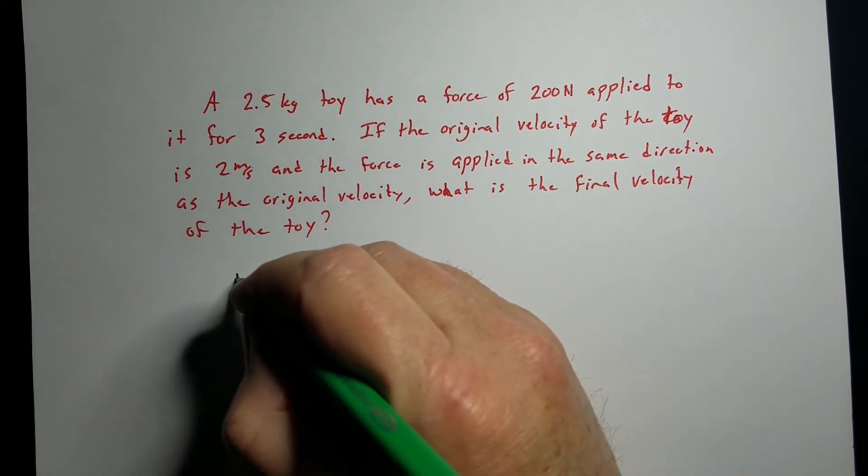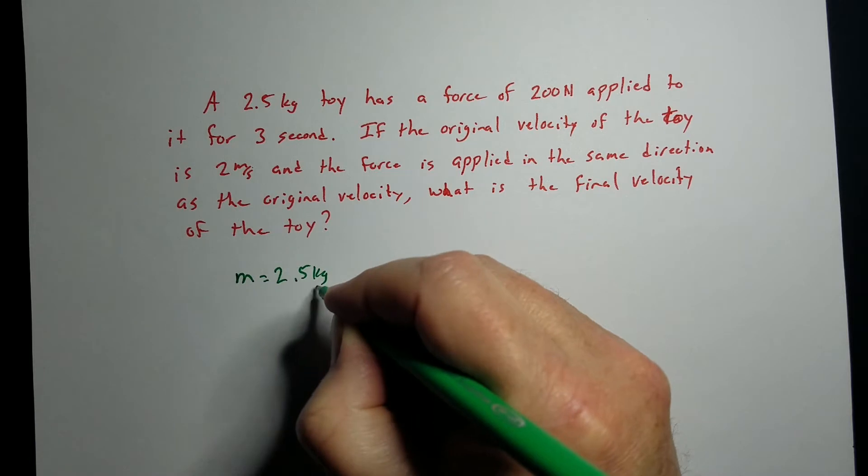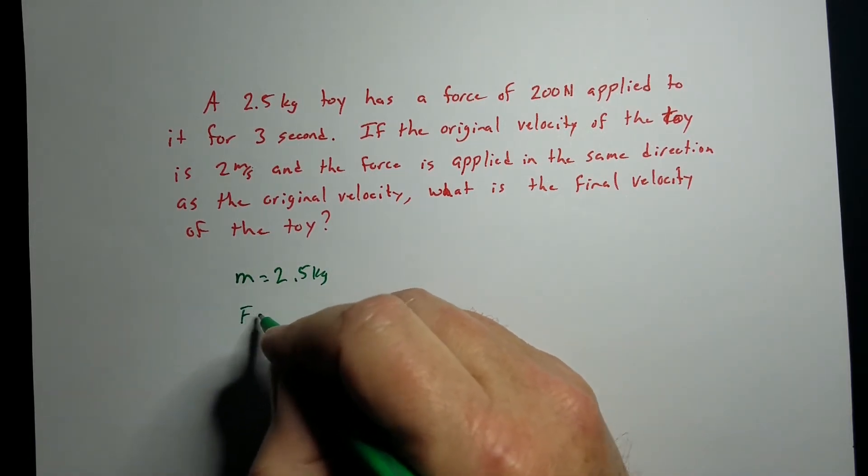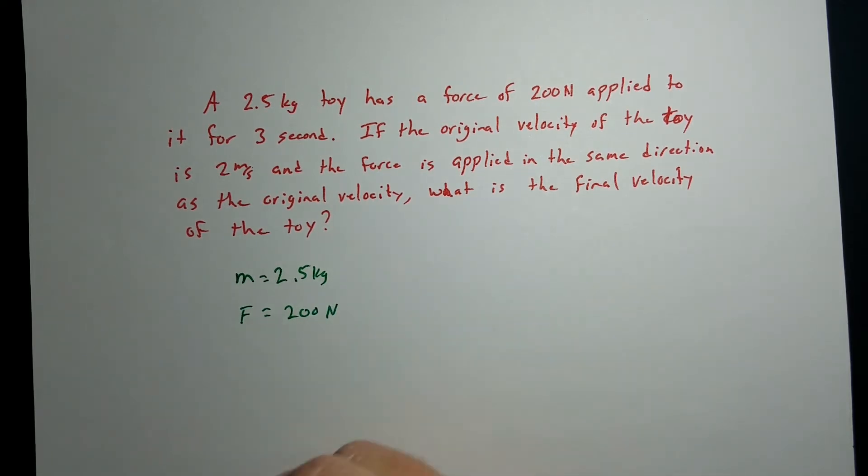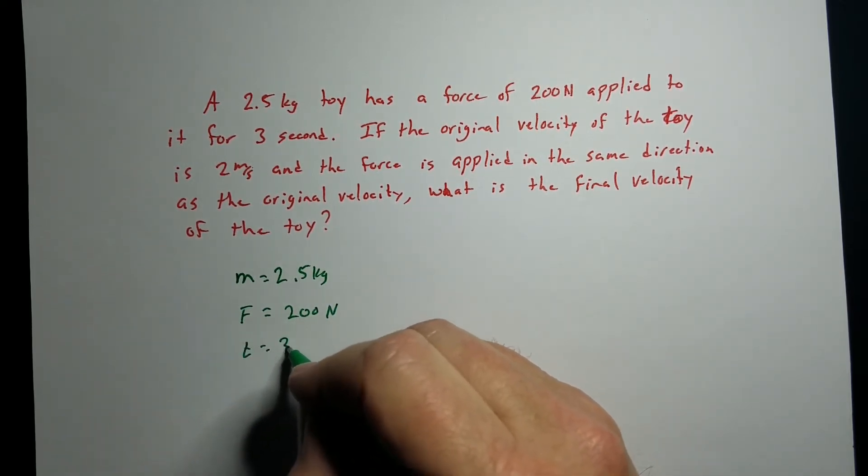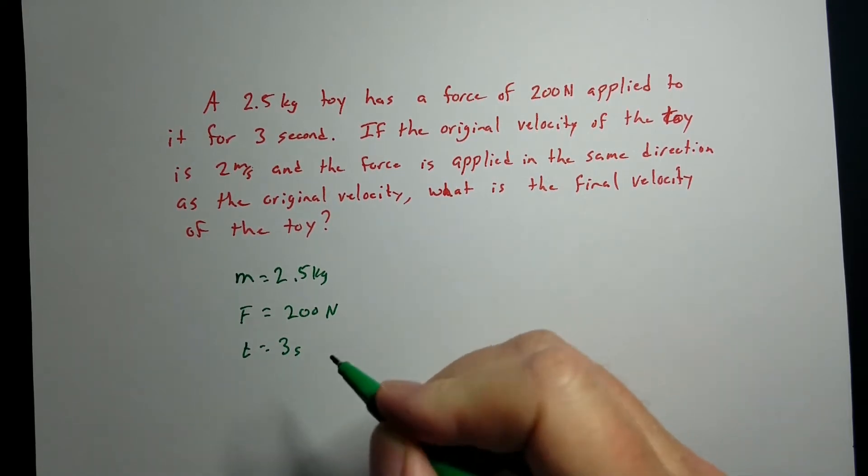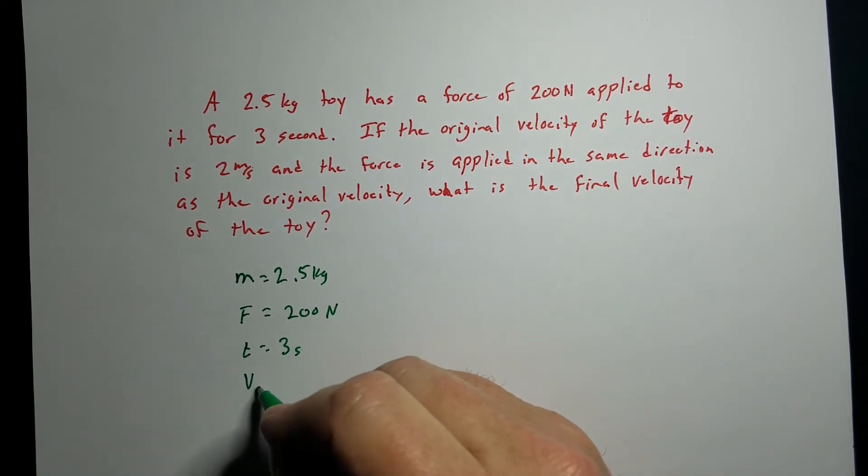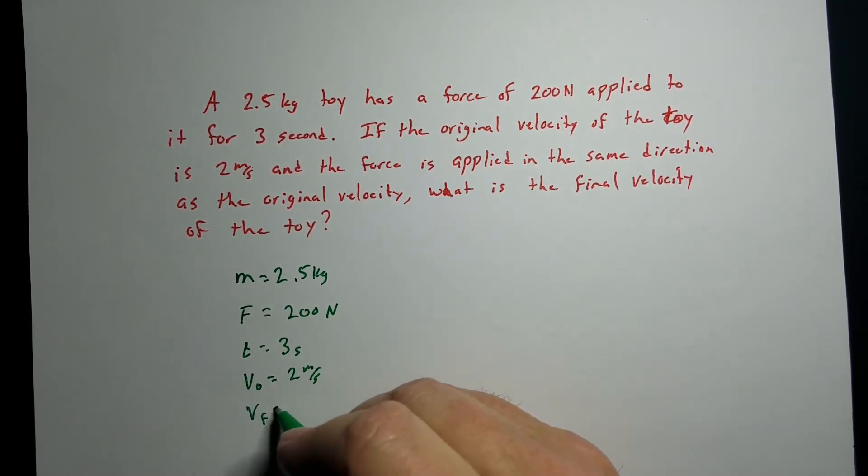Well, this is one of those where we've got a list of information. The mass is 2.5 kilograms. Force, and that is a net force by the way, of 200 newtons. It's applied for 3 seconds. And we have an original velocity of 2 meters per second. And we're looking for the final velocity.